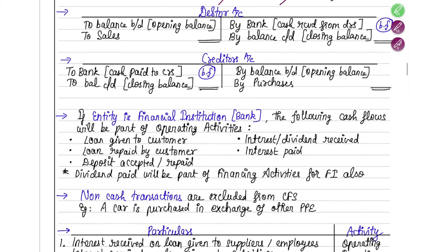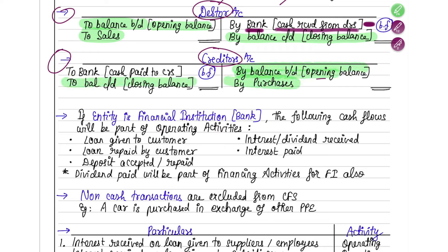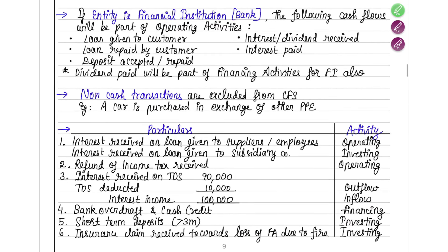To find cash received from debtors under the direct method, prepare a debtor account with opening balance, closing balance, and sales — the balancing figure gives cash received from debtors. Similarly, for creditors, write opening balance, closing balance, and purchases — the balancing figure gives cash paid to creditors.